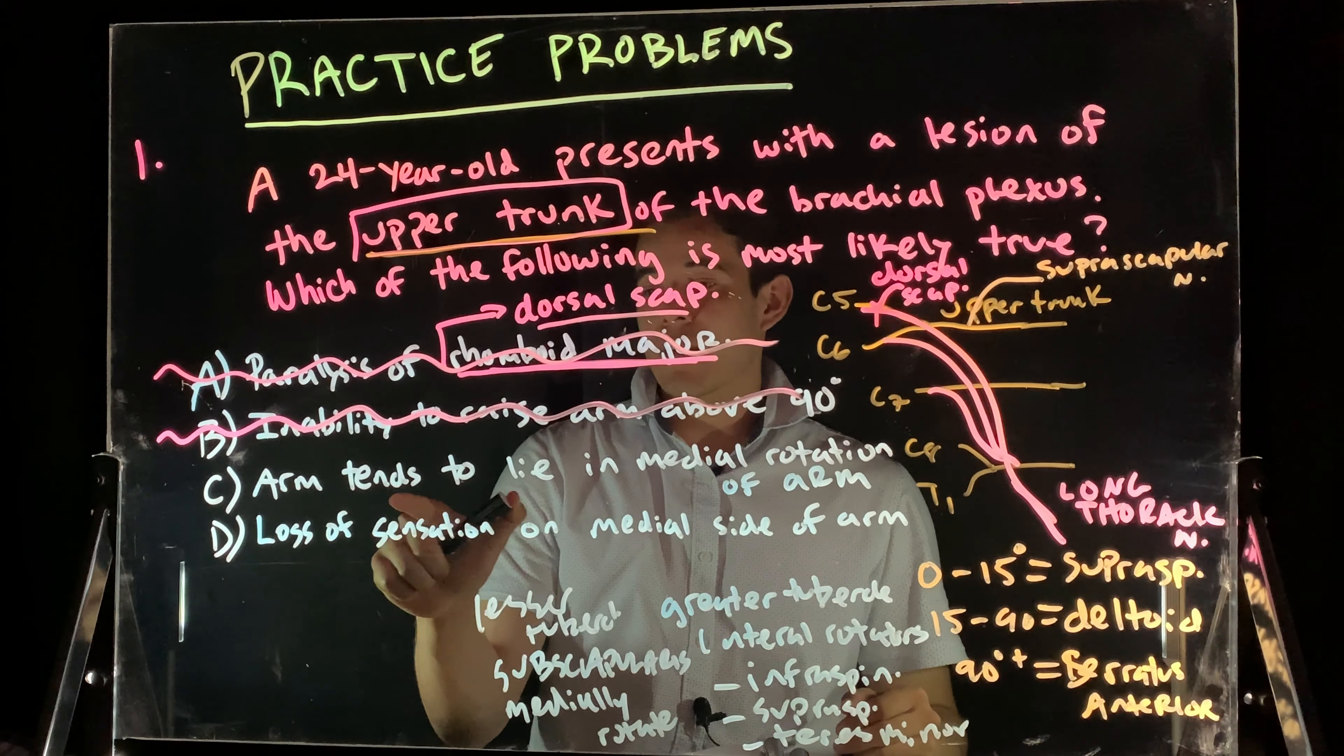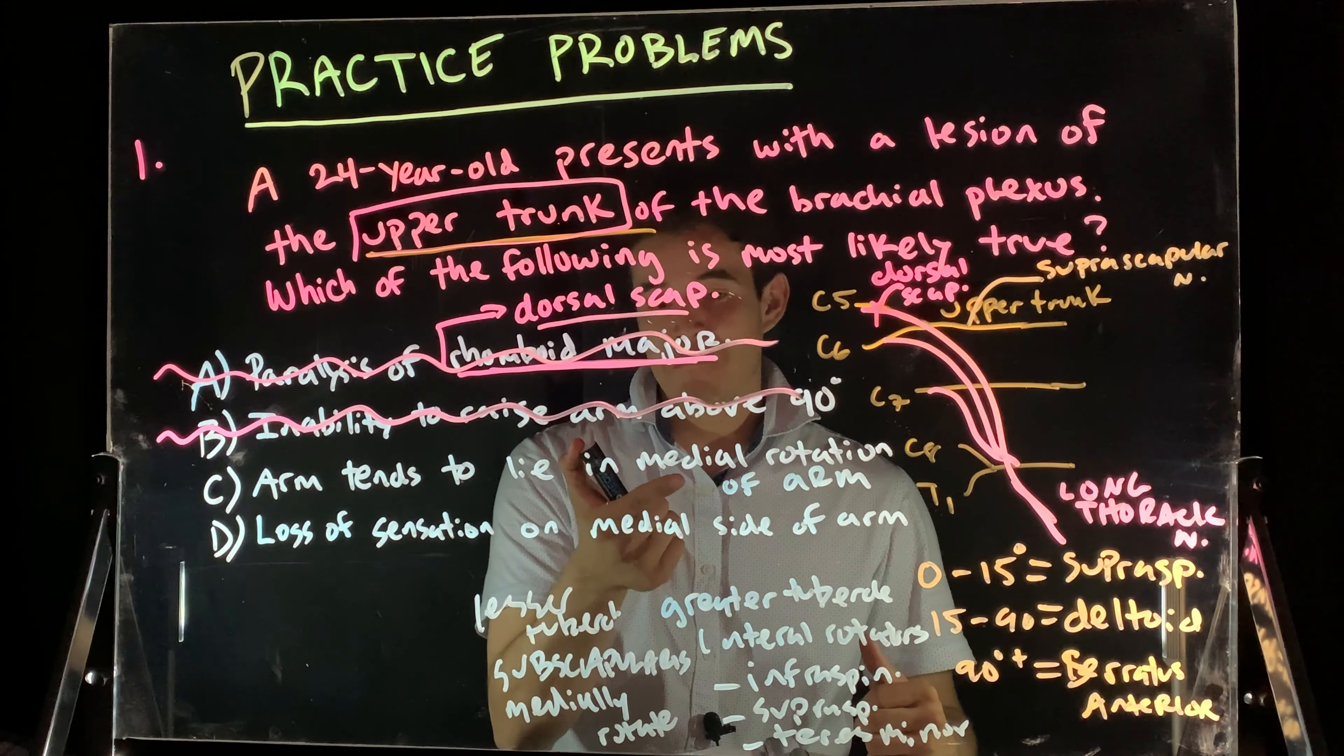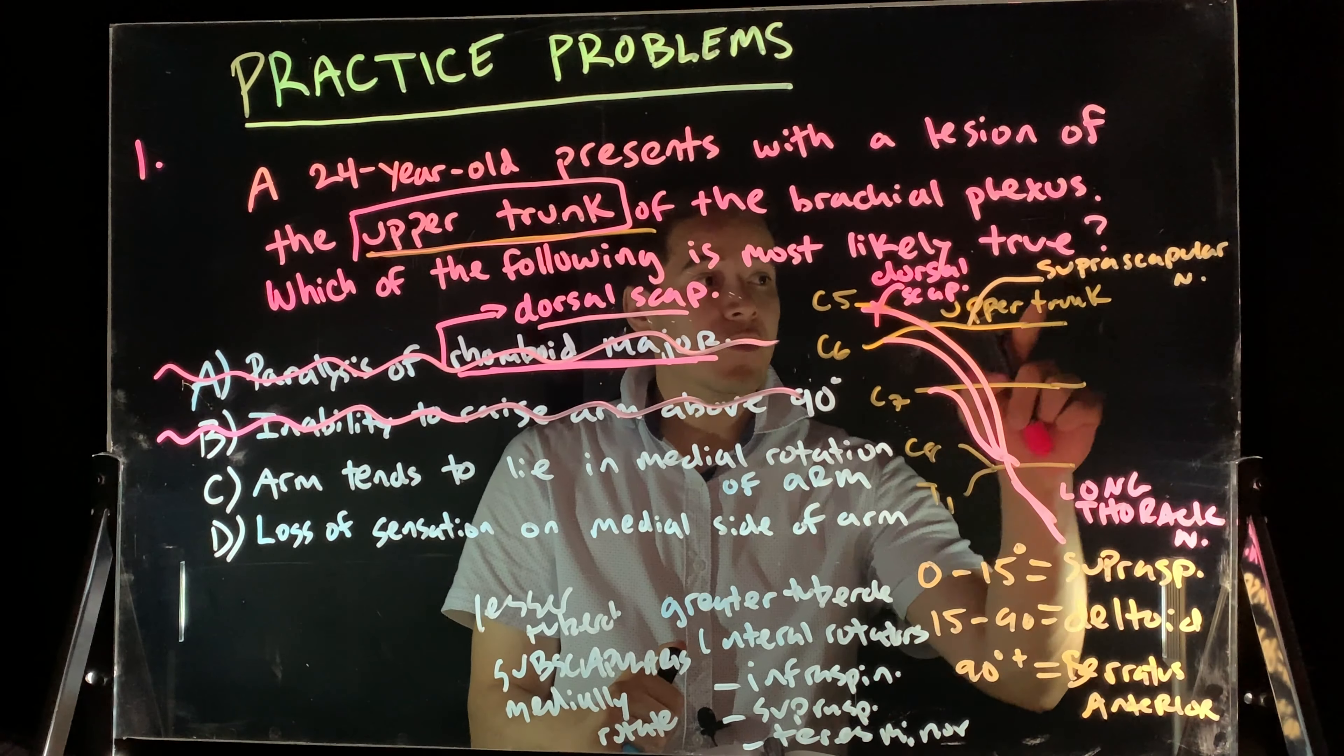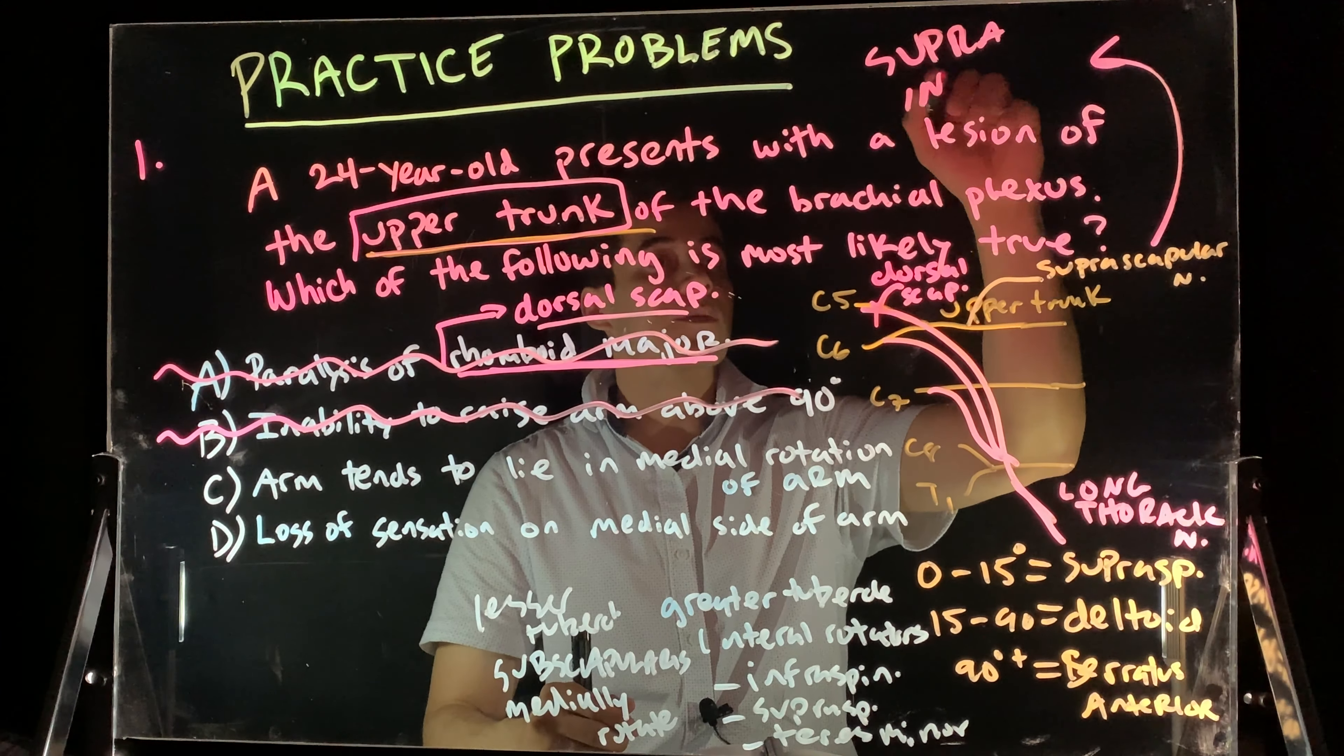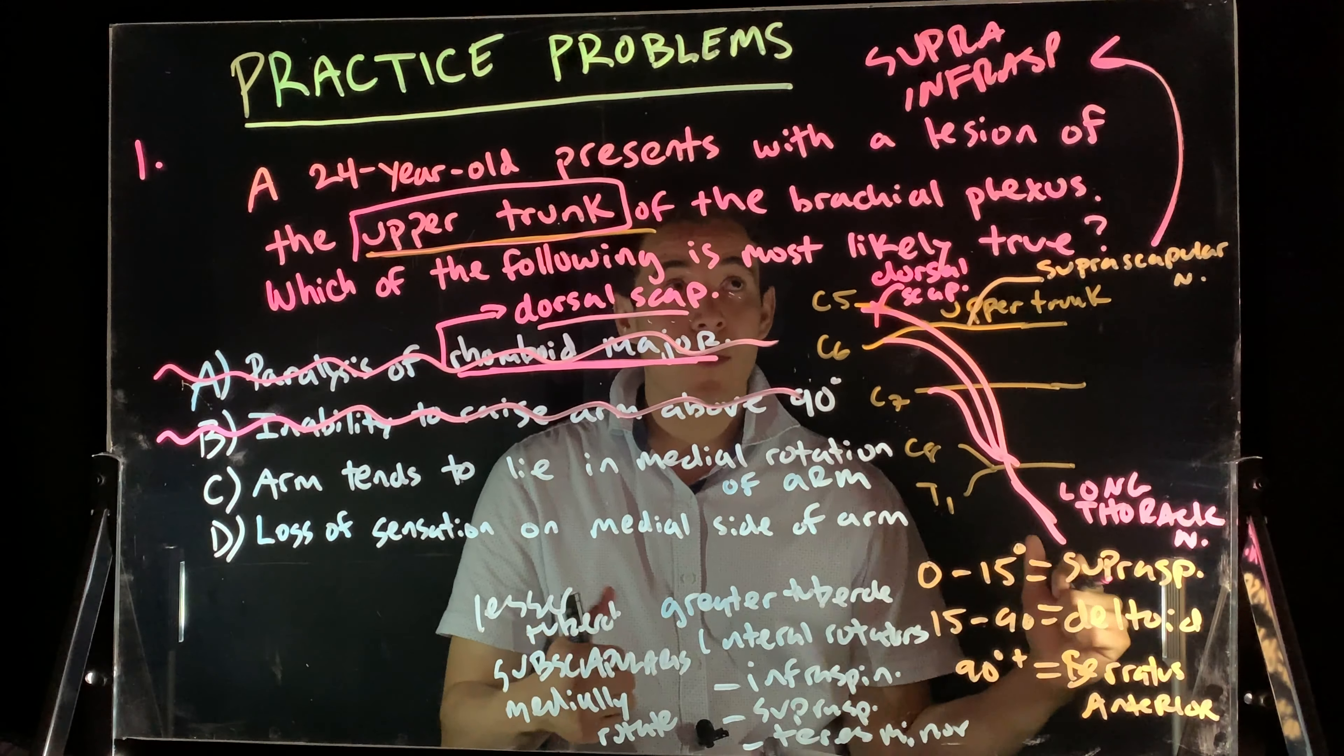So, essentially, here, if the arm tends to lie in the medial rotation, well, let's figure out what innervates the medial rotators and what innervates the lateral rotators. Coming directly off my upper trunk is my suprascapular nerve. This goes and supplies my supraspinatus and my infraspinatus. So, these muscles are helping me laterally rotate.